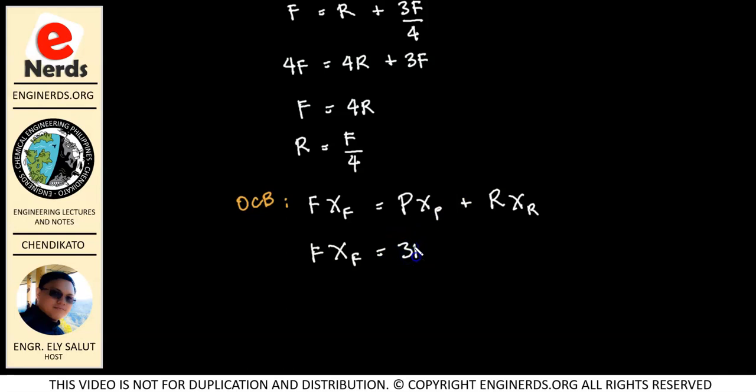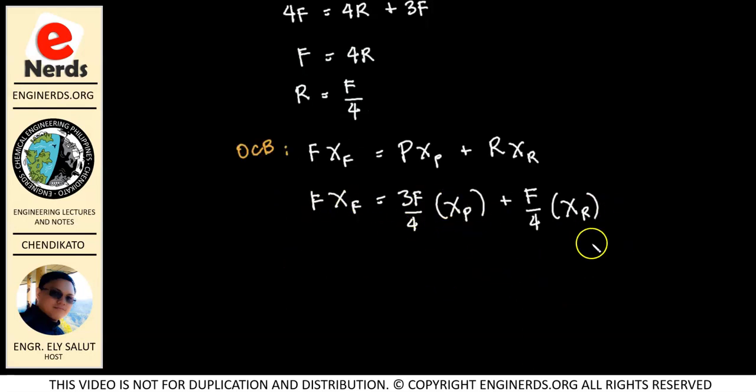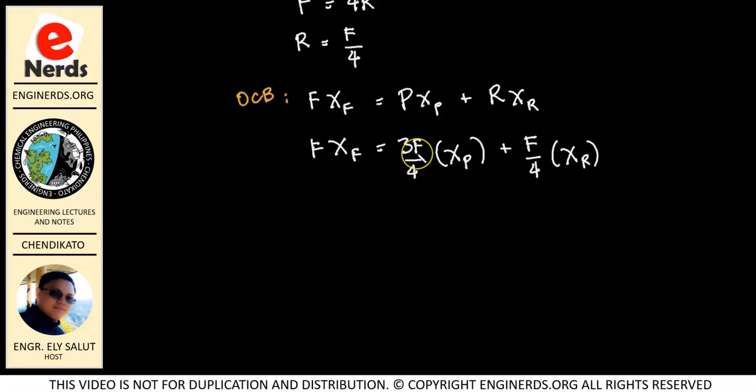So we have 3F over 4 times XP. Then plus our R, we can also represent as a function of F. So we have F over 4. So F over 4 times XR. Alright. But since both sides of our equation has F, so that means we can cancel out F by factoring out F on the right side of the equation. So we have F times XF is equal to F times 3XP over 4 plus XR over 4. Right? So we can cancel our F.